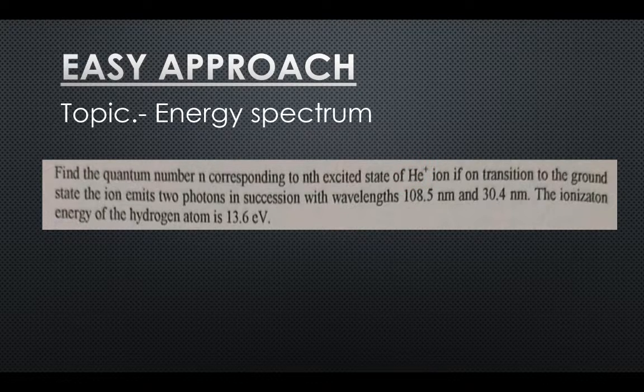If the transition from nth state to the ground state happens, then the ion emits two photons in succession with wavelengths 108.5 and 30.4 respectively. So two wavelengths are given in the question.